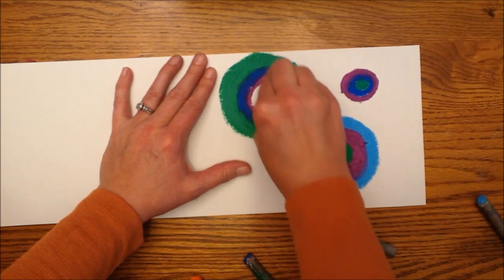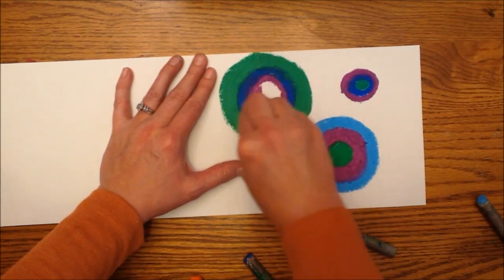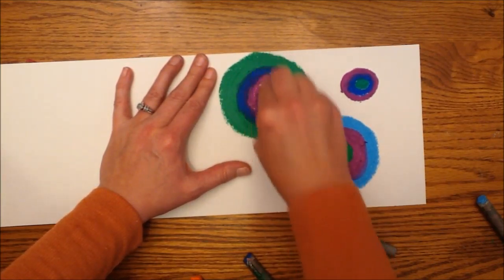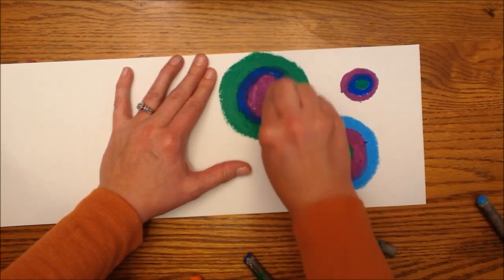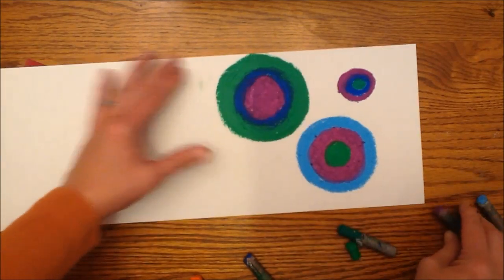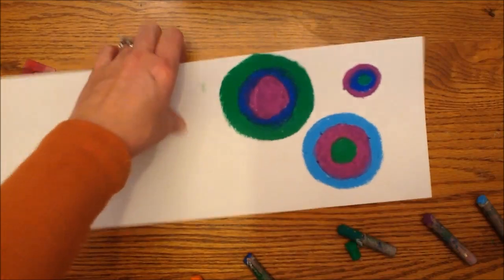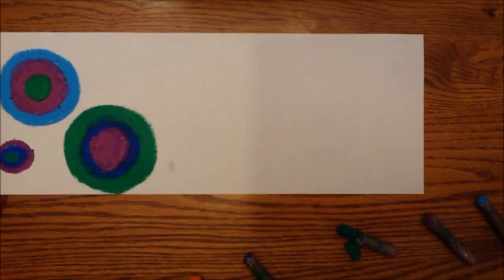So I've used three different colors, or three different hues. I've used purples, blues, and greens, and I've done them in different orders on this side of my paper. So now I'm going to flip my paper around and work on the warm colors on this side.